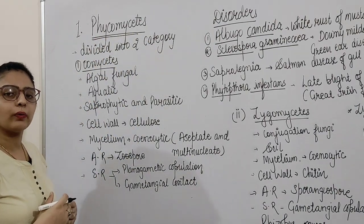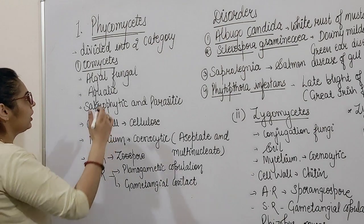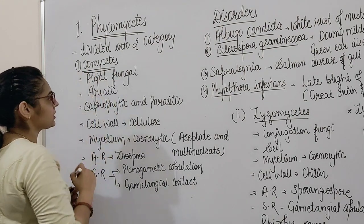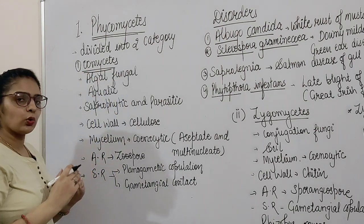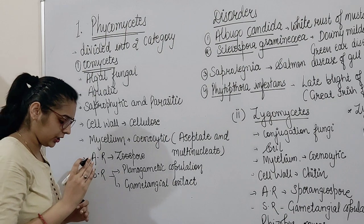Phycomycetes is divided into two categories. The first is Oomycetes, and it is also known as algal fungi.